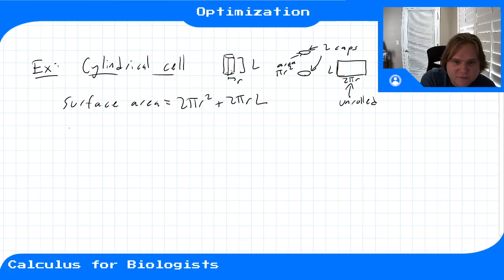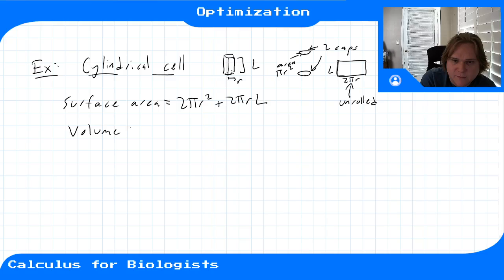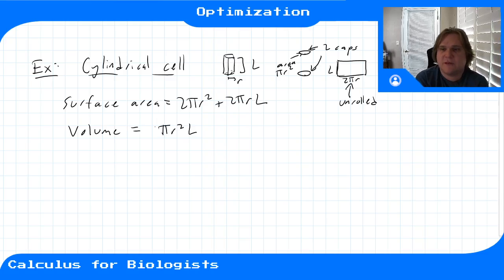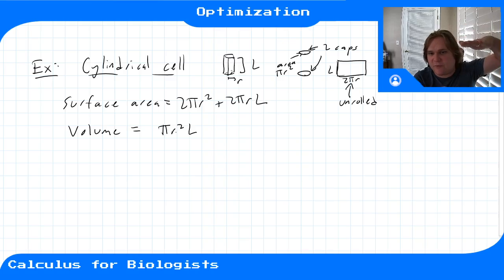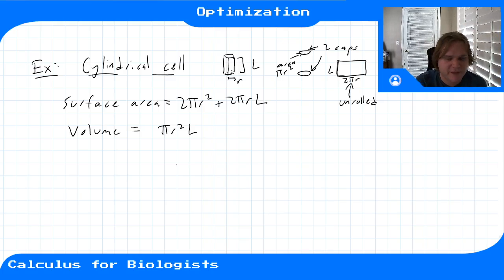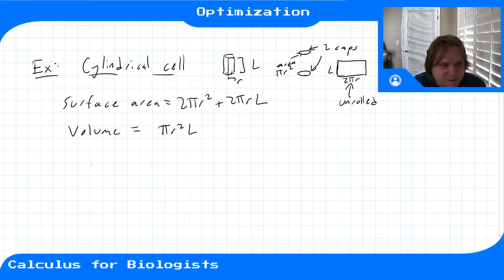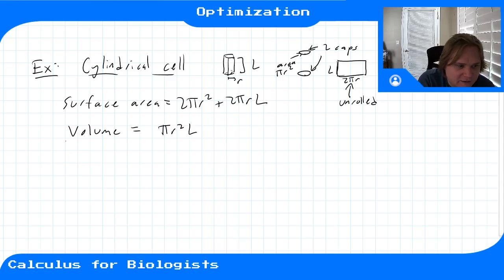The volume of the cylinder is V = πr²L. The way to think about this is: you have a disk of area πr², and you stack them up to height L, giving you πr²L.